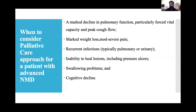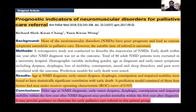A 2018 Annual Palliative Medicine article noted that most neurological disorders have poor prognosis with symptoms amenable to palliative care. Older age, RMD diagnosis, early onset dyspnea, dysphagia, constipation, and impaired mobility within the first year after diagnosis may predict mortality within the first year — providing guidance for early palliative care referral in this patient group.